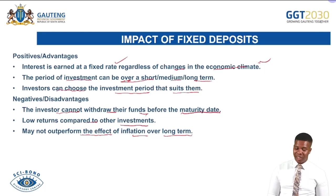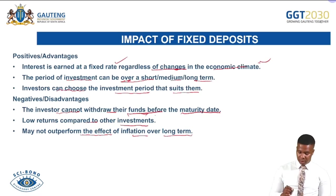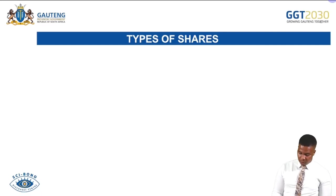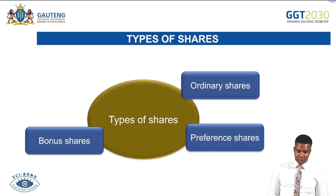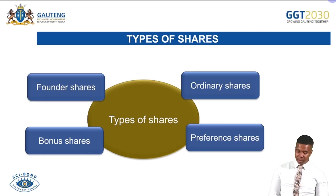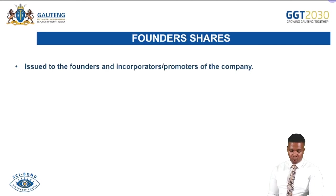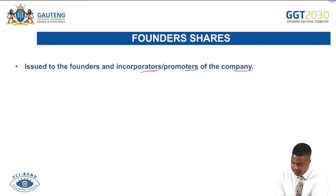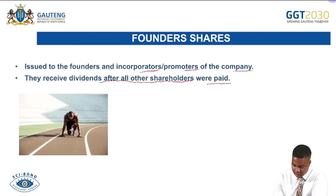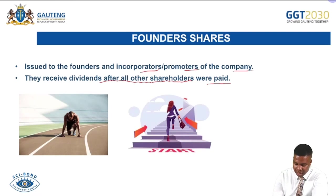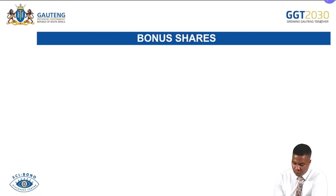We now look at types of shares. There are four types: ordinary shares, preference shares, bonus shares, and founder shares. Founder shares are issued to the founders, incorporators, or promoters of the company. They receive dividends after all other shareholders have been paid. Bonus shares are shares given as payment to shareholders — they are issued to compensate for unpaid dividends.